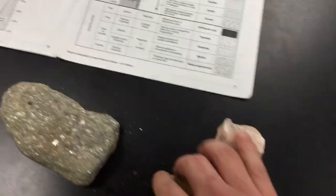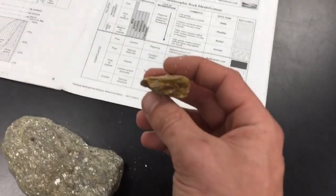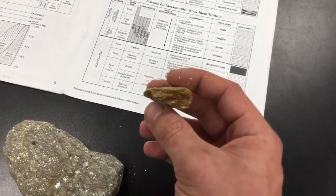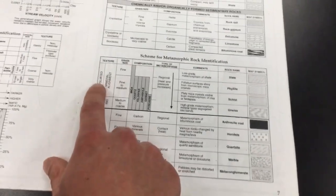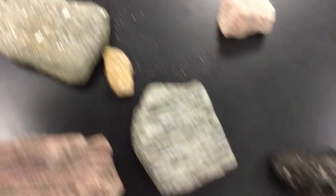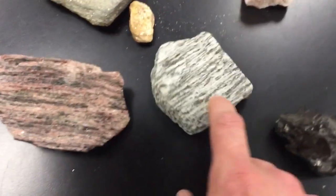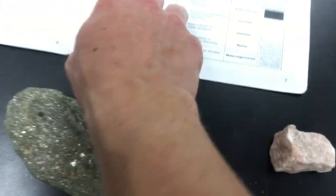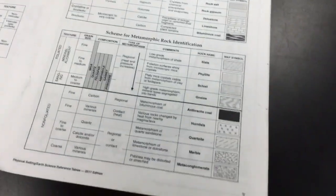This sample here is also foliated — it's almost flaky, flakes off in your hands. See that layering? That is foliated. And these big thick lines here, that's called banding.